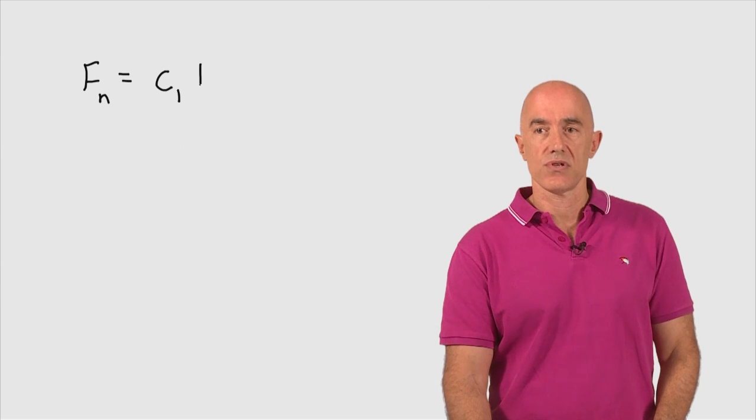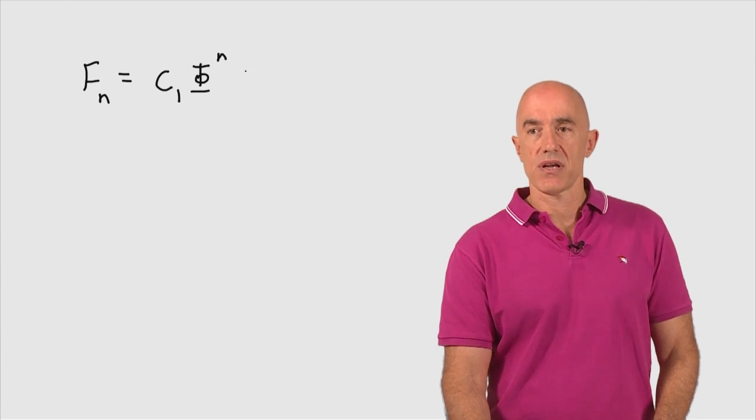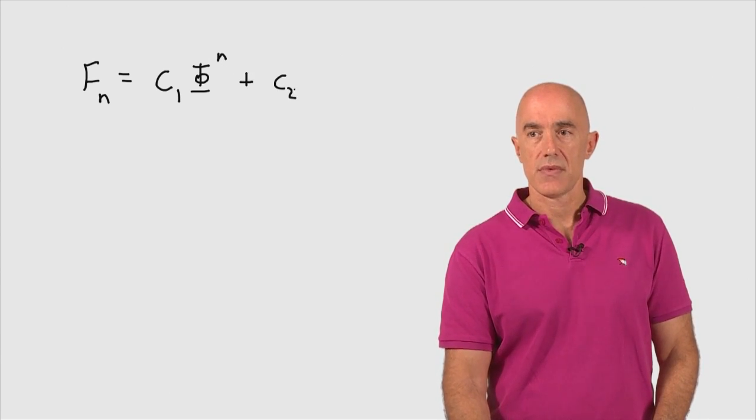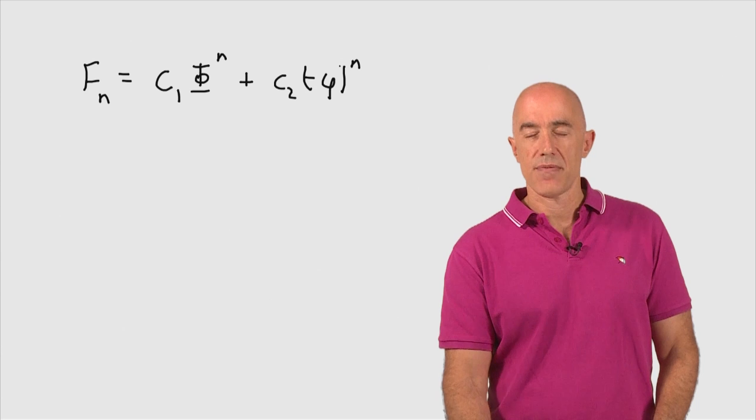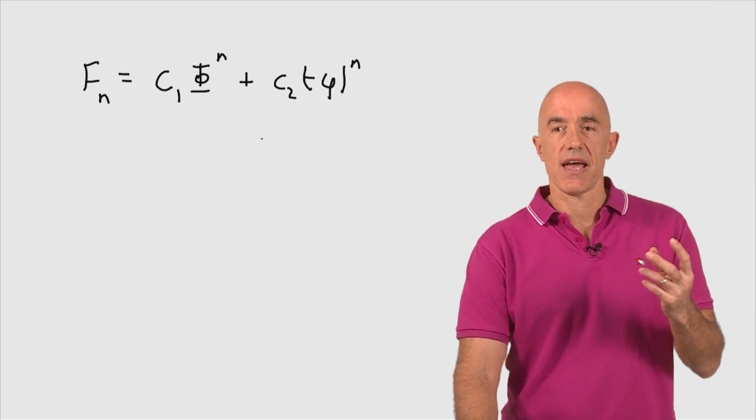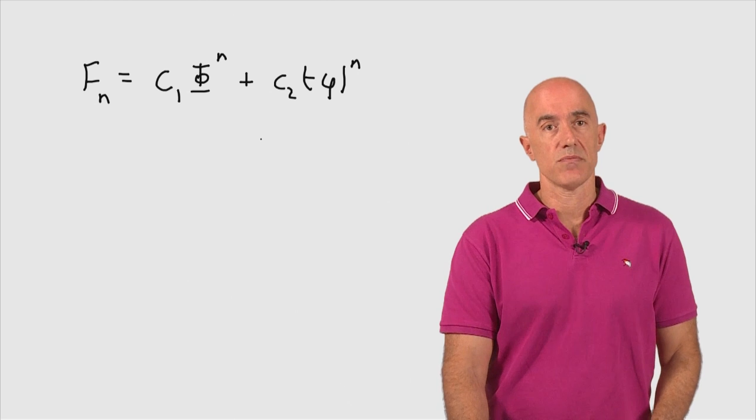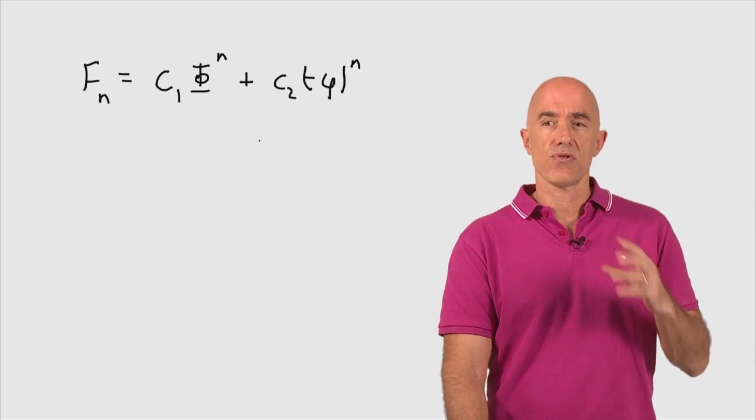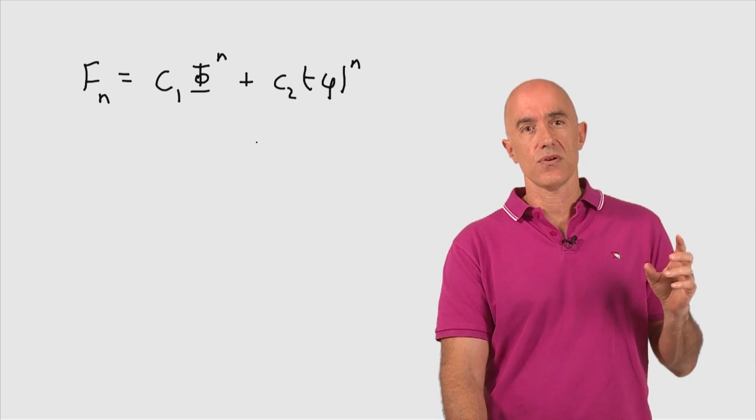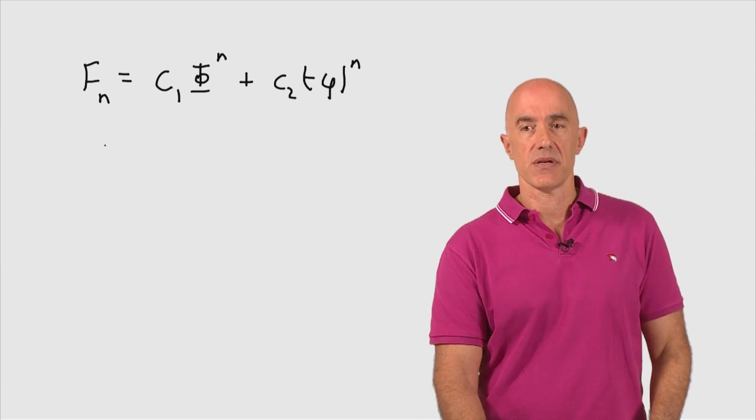So we can multiply one of the two solutions by c1, that's the golden ratio to the nth power, and we can multiply the other solution by c2, that's the negative of the golden ratio conjugate raised to the nth power. So we have now the solution for the nth Fibonacci number. We don't yet know the two constants, c1 and c2, and that's where the initial values come in.